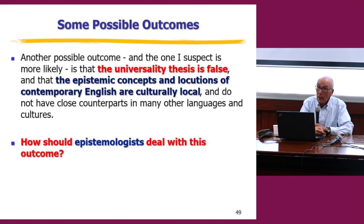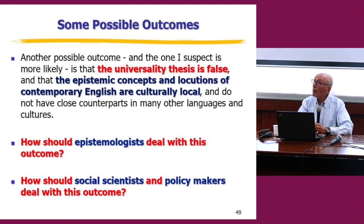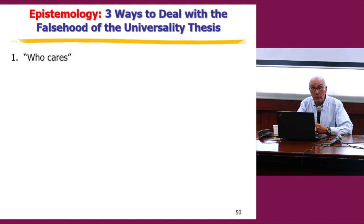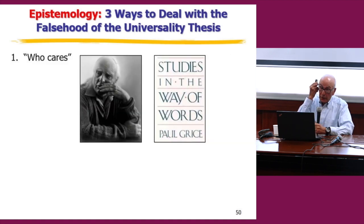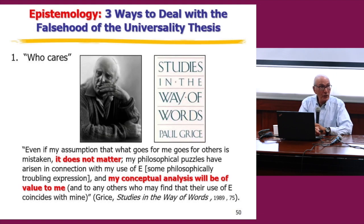Suppose we discover that the universality thesis is false and epistemic terms and concepts embedded in 21st-century English are culturally local. How could epistemologists react to that? There are no doubt a number of answers. I'm going to focus on three — and I'm also going to ask how social scientists and policy makers should deal with that outcome.